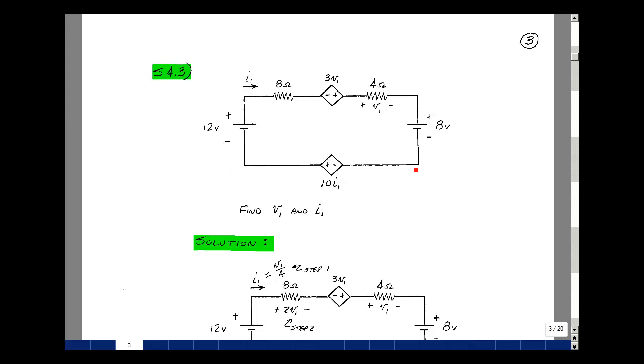Given this circuit, which contains two independent voltage sources, two resistances, and two controlled sources, can you solve for the voltage V1 and the current I1?